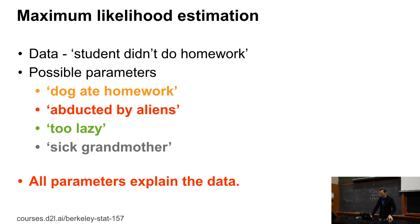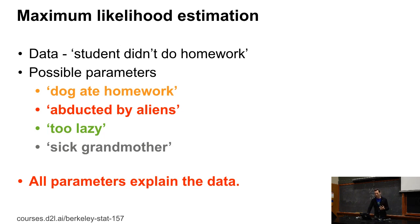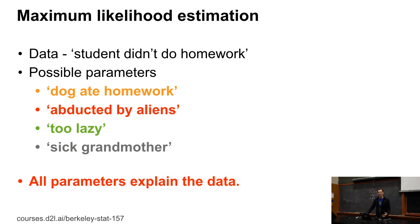Let's pick something closer to home. Let's say you didn't do the homework. That's the data. Now I can come up with four different parameterizations that all perfectly explain the data: the dog ate the homework, you were abducted by aliens, you were too lazy, or your grandmother was sick. All those parameters perfectly well explain the data.